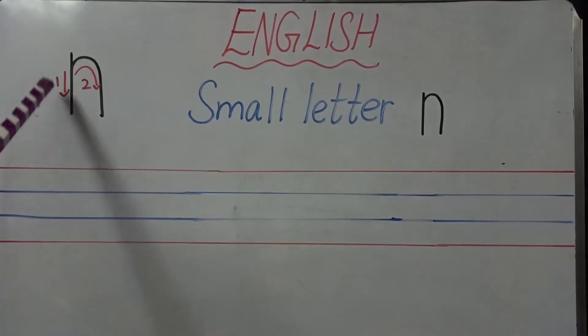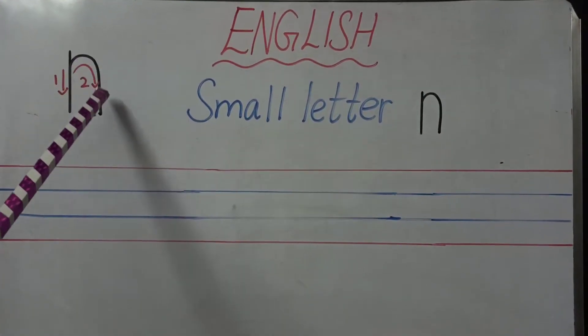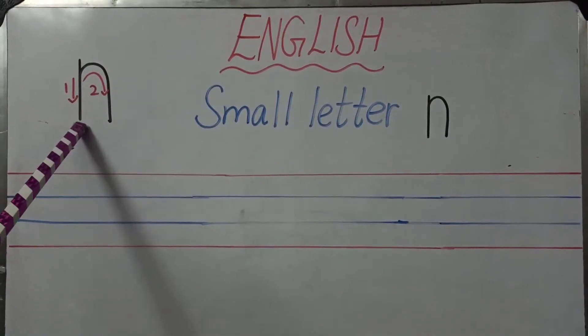Number one as a standing line. And number two as an inverted U curve. Only one curve, inverted U curve. This is called small letter N writing.